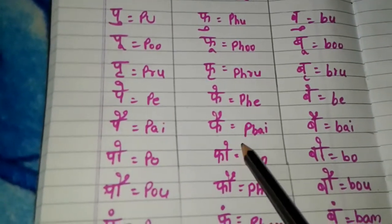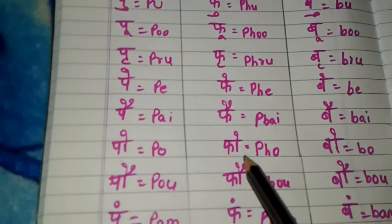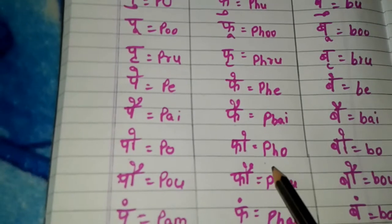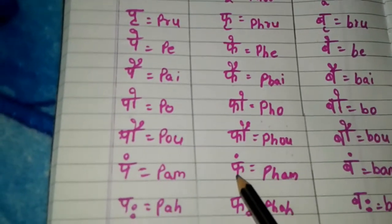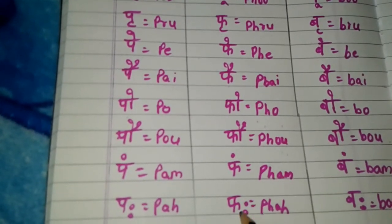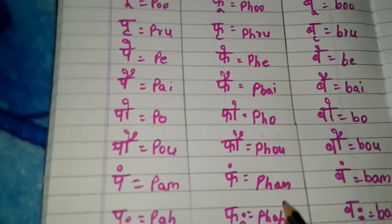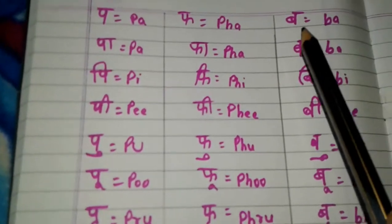Fi, P-H-A-I. Fu, P-H-O. Faw, P-H-O-U. Fum, P-H-A-M. Faha, P-H-A-H. Okay, the next letter.